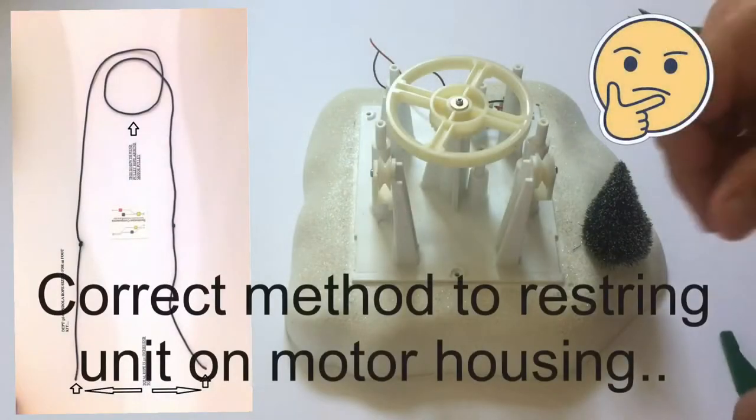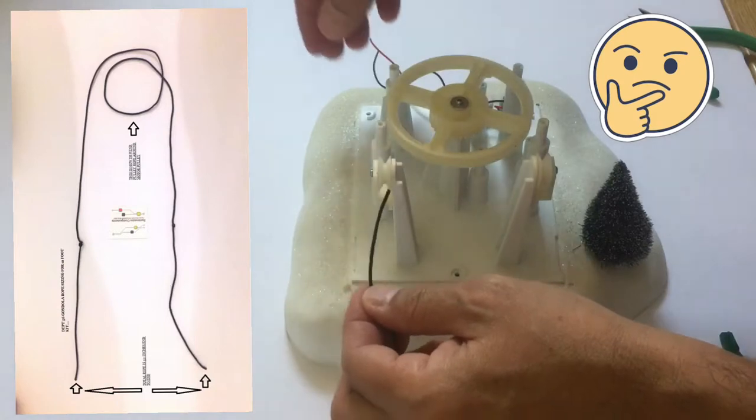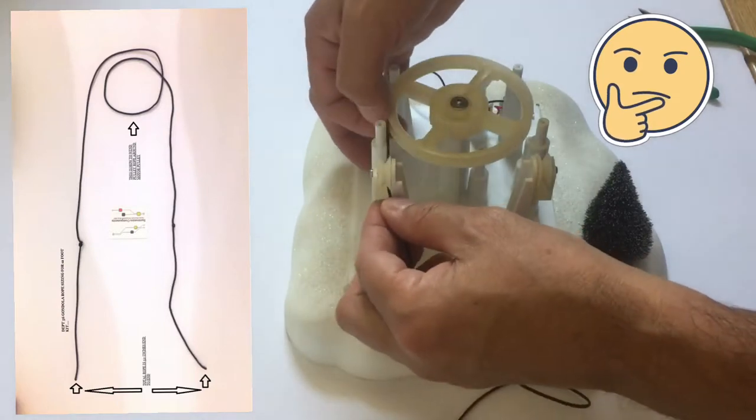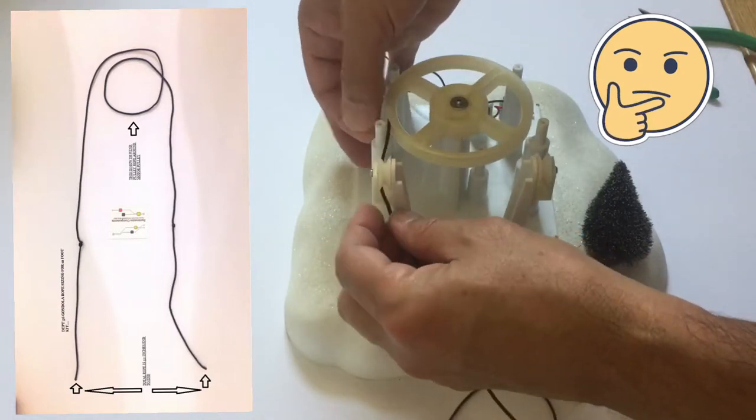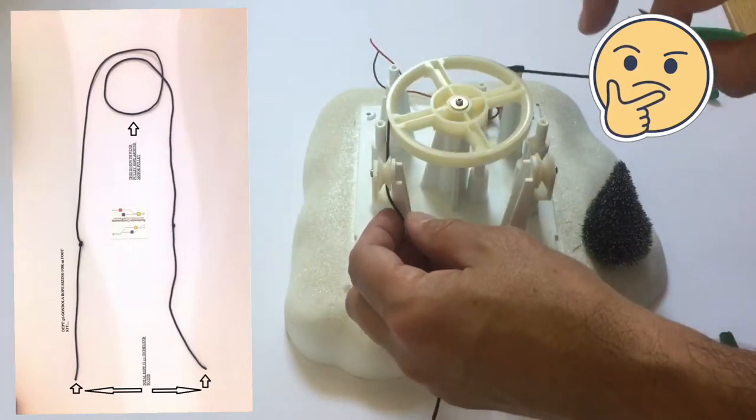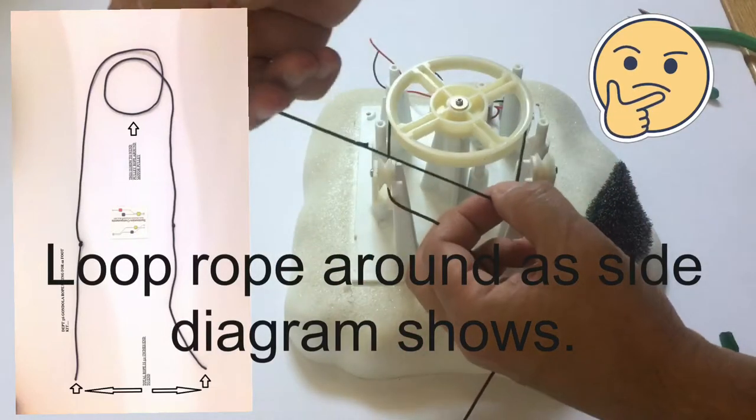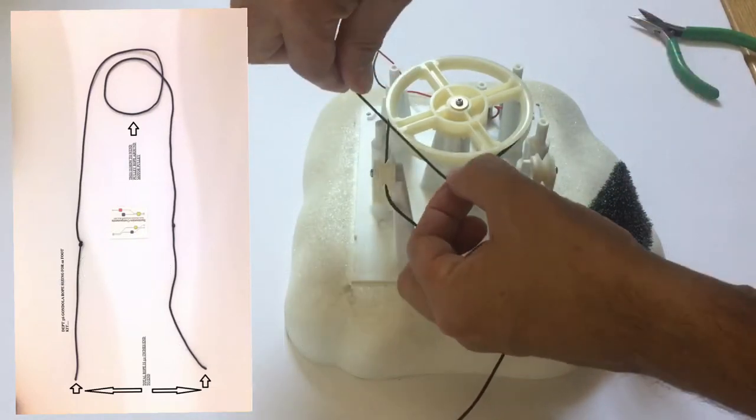The correct way is to restring it as you see in the diagram. Put it through the pulley, run it around the larger motor pulley, and loop it all the way around again.